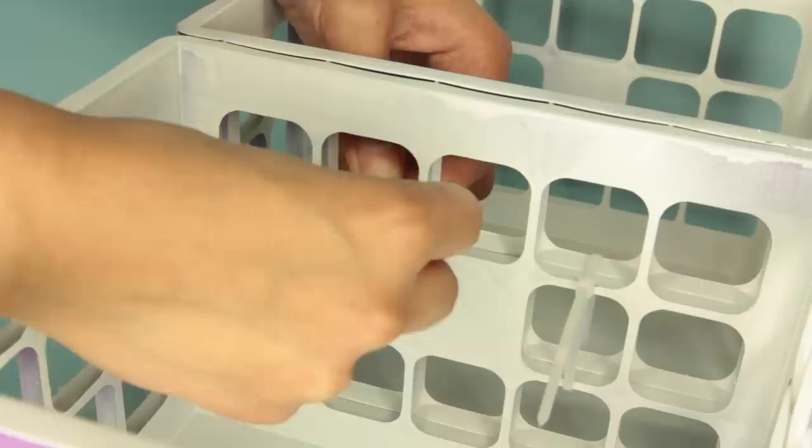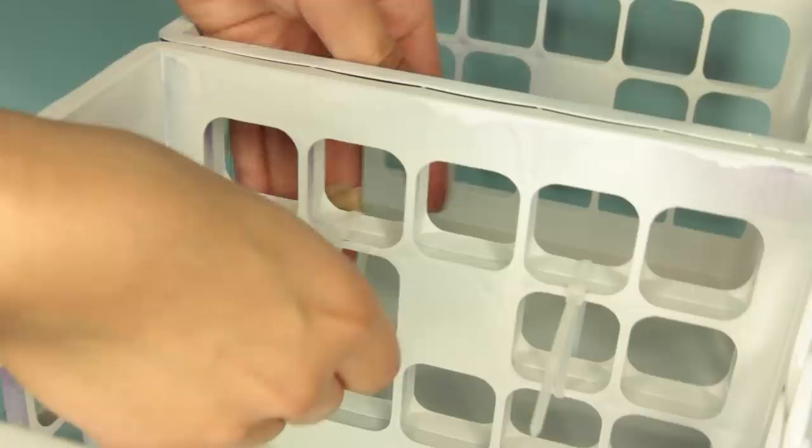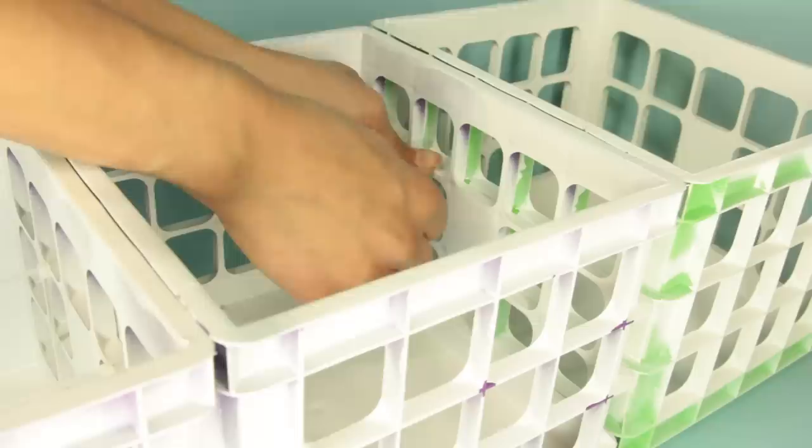If you already own crates and want to try a new look, you can easily just unattach the crates and repaint them. Once I've got three sets of three crates attached, I then attach the sets together, again using zip ties.